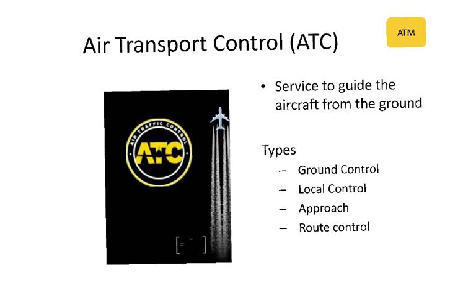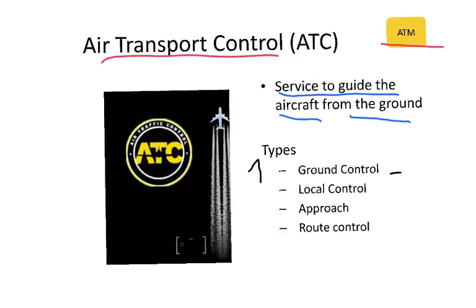Another important element of aviation is air traffic control, also called ATM, which stands for Air Traffic Management. It's a service to guide aircraft from the ground, mainly to avoid collisions among aircraft. The different types are: first, ground control, to guide the plane on the airport ground; second, local control, which covers the takeoff and landing phases of the flight; third, approach control, which applies when airplanes are getting close to the airport while flying; and fourth, route control, when the aircraft is flying from A to B and is at the flight level.